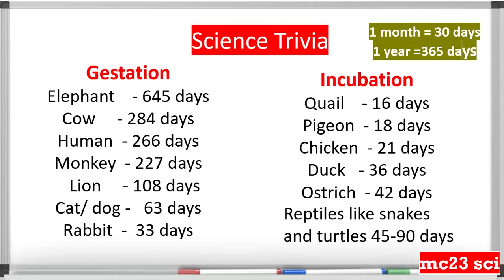Continuing the trivia: monkeys take 227 days, lions 108 days, cats and dogs 63 days, and rabbits 33 days. For the incubation period, from laying eggs to hatching: quail takes 16 days, pigeons 18 days, chicken 21 days, duck 36 days, ostrich 42 days, and reptiles like snakes and turtles take 45 to 90 days.